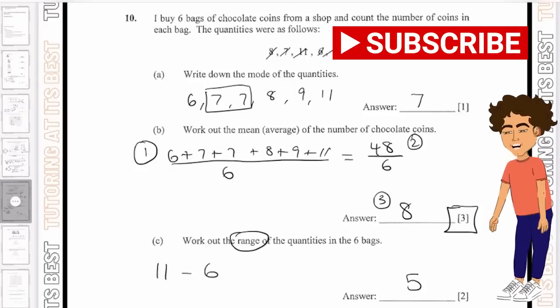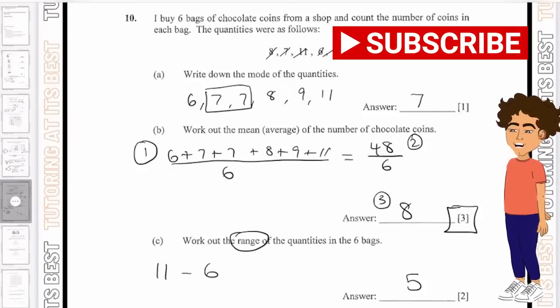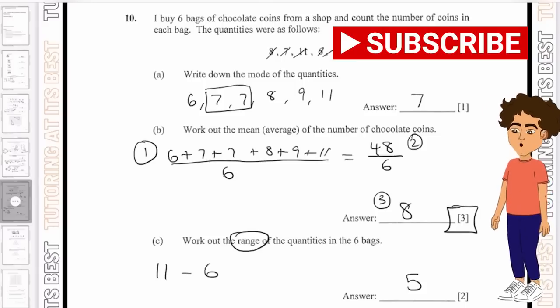Just to reiterate once more, the entrance assessment for candidates applying to join year seven for 11 plus consists of the cognitive abilities test, which is your CAT 4 test and the English and mathematics papers.